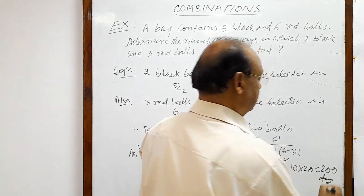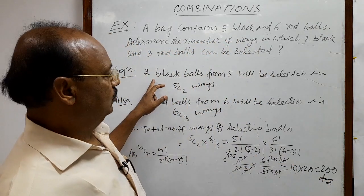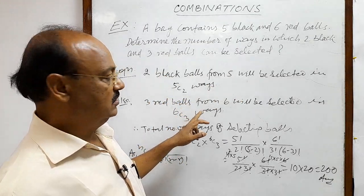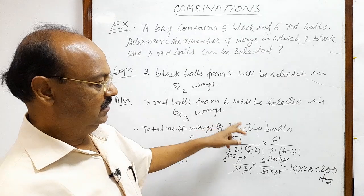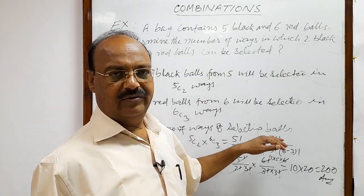This is the answer. This is the total number of ways of selecting 2 black balls from 5 black balls and 3 red balls from 6 red balls. I hope you have understood it very well. Question is very simple.